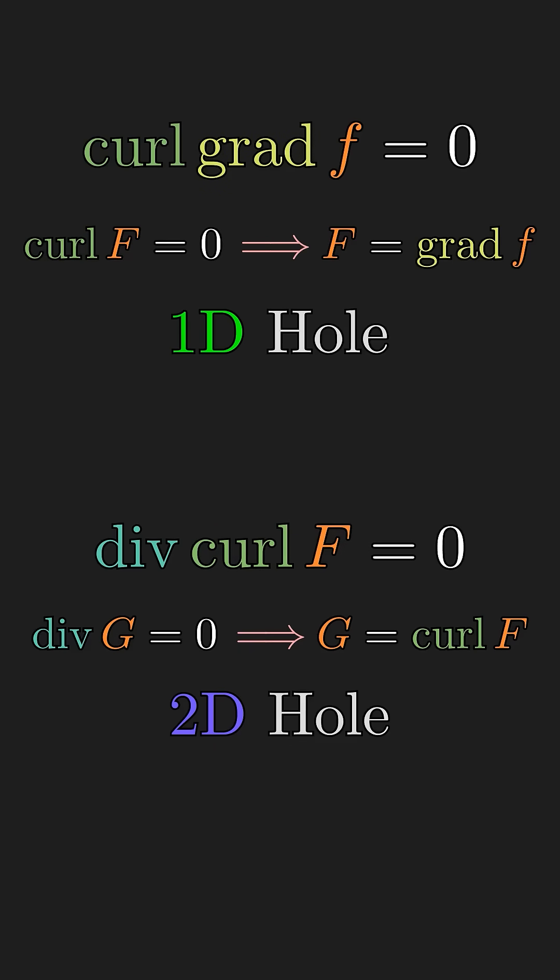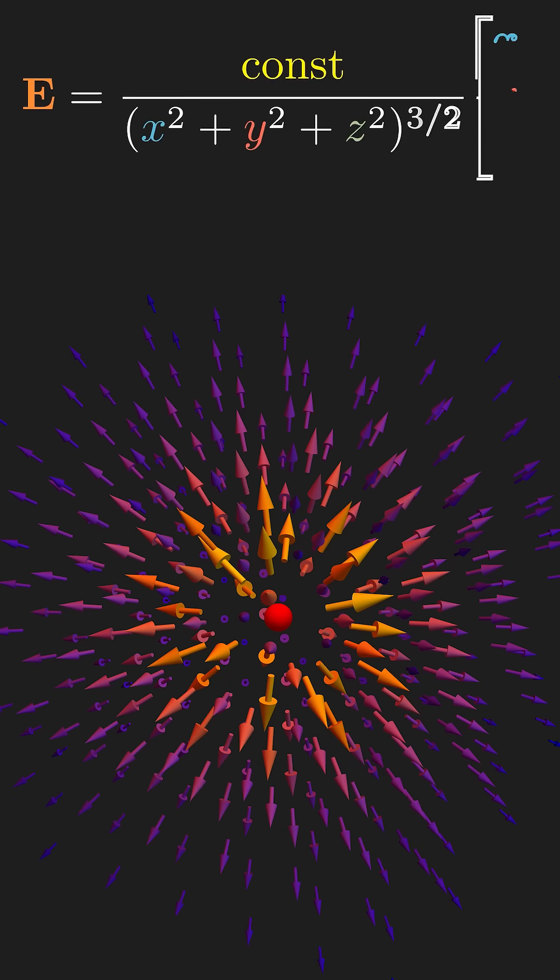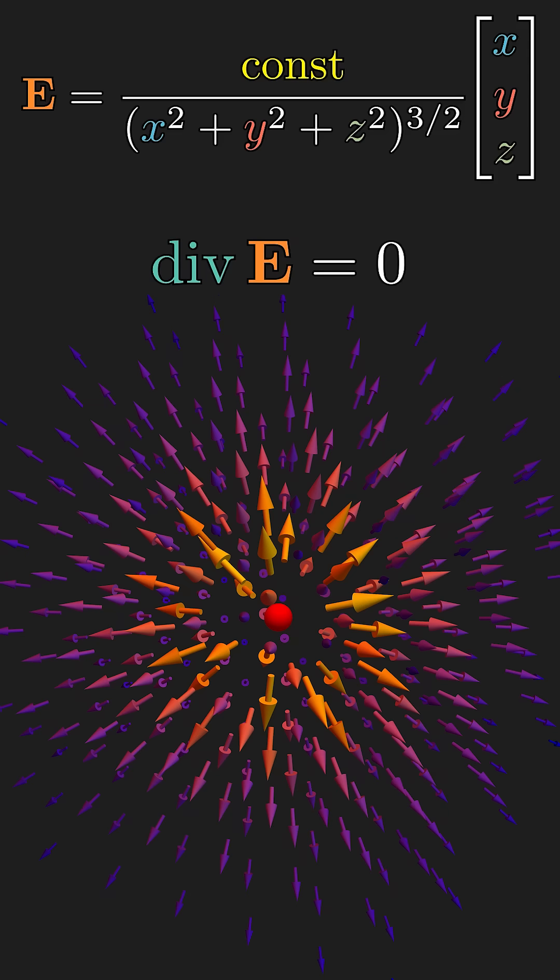In fact, the extent to which this fails to be true measures the number of holes in our space. Over 3D space with no origin, there is exactly a one-dimensionally infinite family of functions whose divergence is zero, but not the curl of any other function. This is the same function as the electric field of a single static charge.